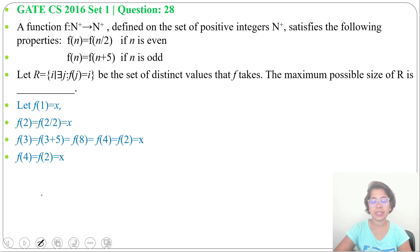Now f(5). 5 is an odd number, so it will be f(5+5). 5+5 is 10, f(10). And 10 is an even number, so it will be f(10/2), it will be f(5).